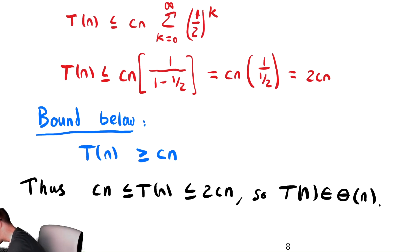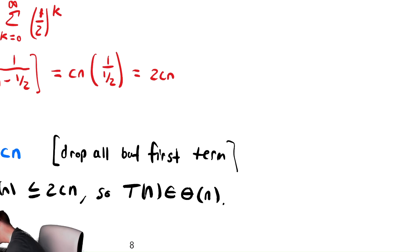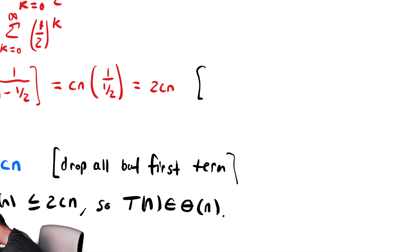And let's go back and label our steps as we've done in the past. This step here was drop all but the first term. All but first term. Here, what we've done is just a bunch of algebra. So this is our infinite geoseries formula.